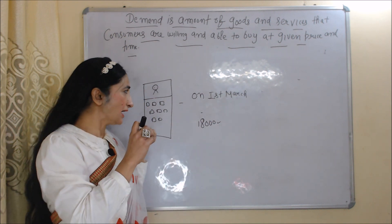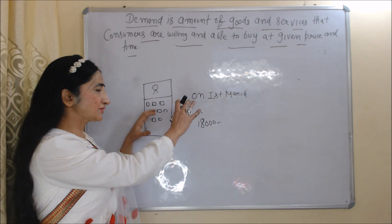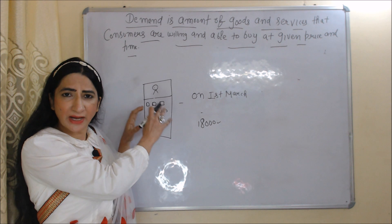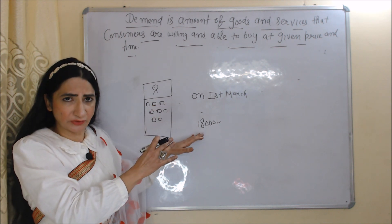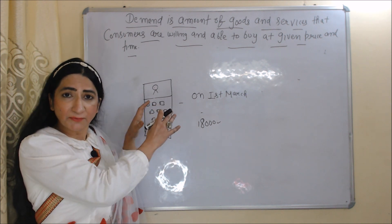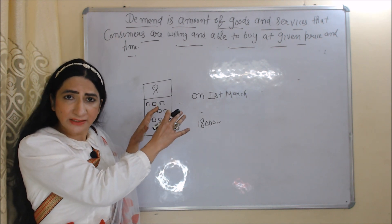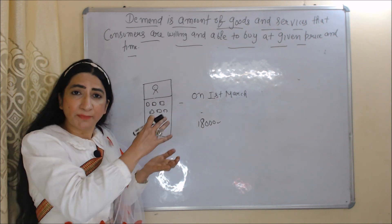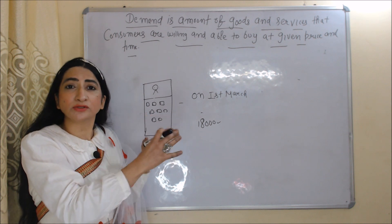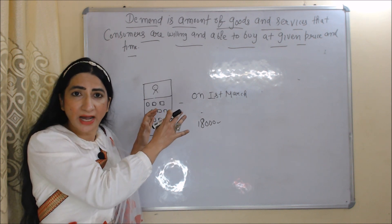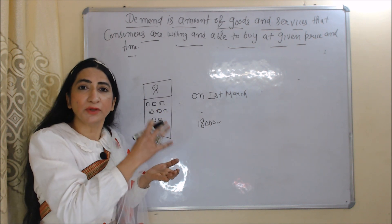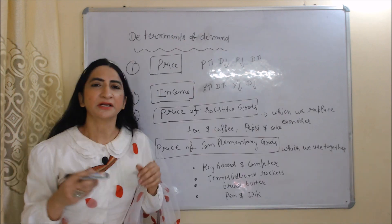For example, on 1st March, price of this mobile is 18,000. I am willing to buy this mobile, plus I also have money to buy this mobile. So it will be called my demand.